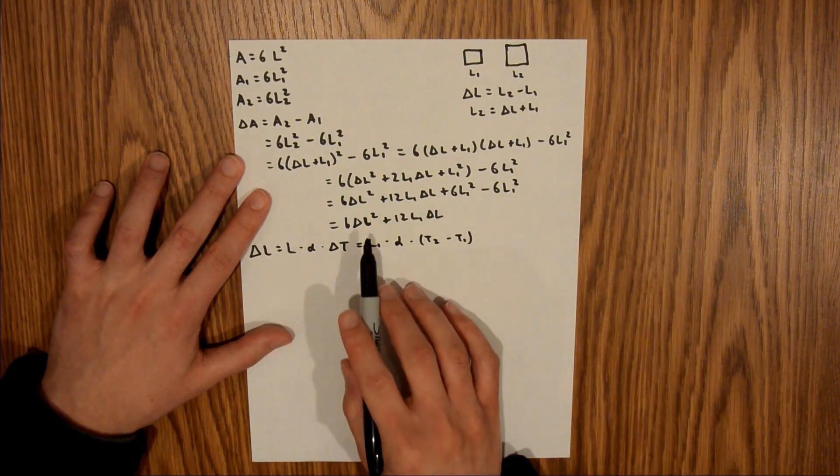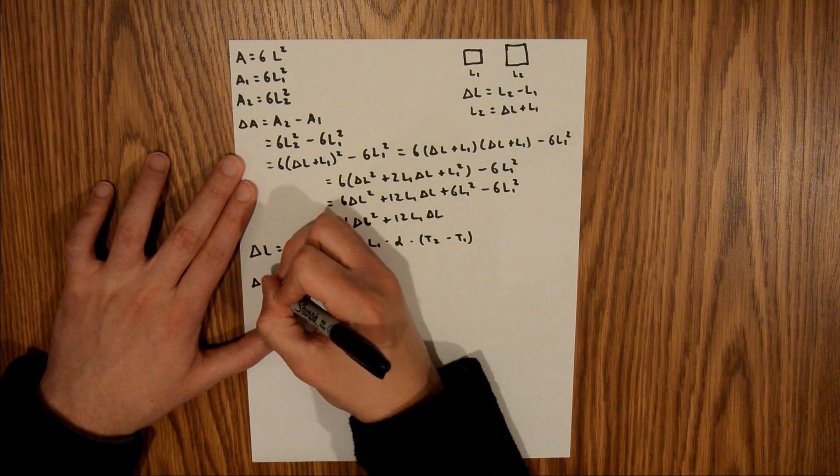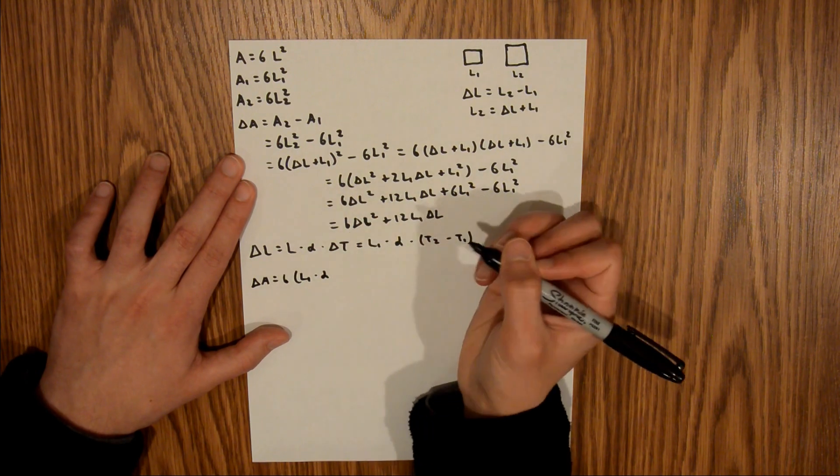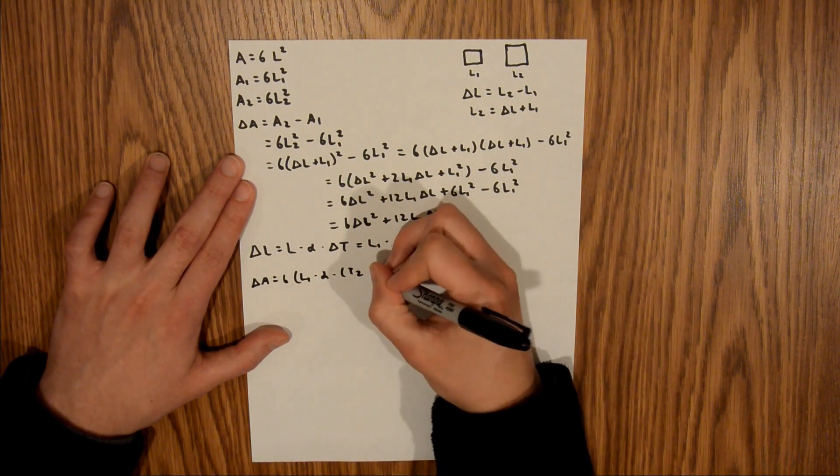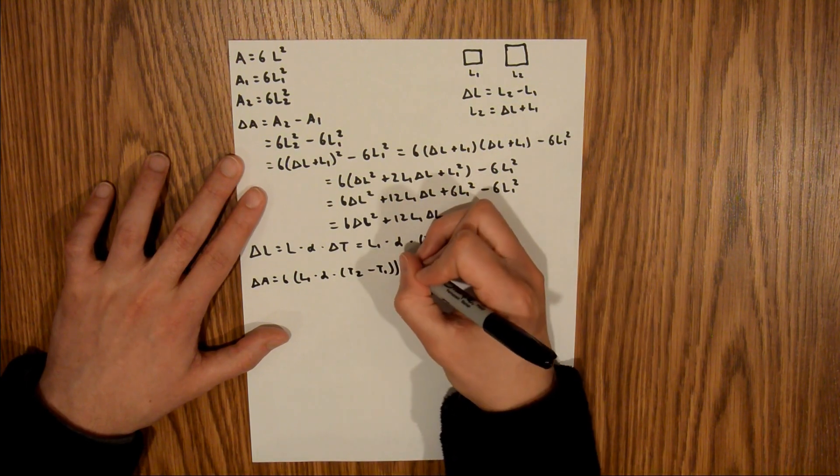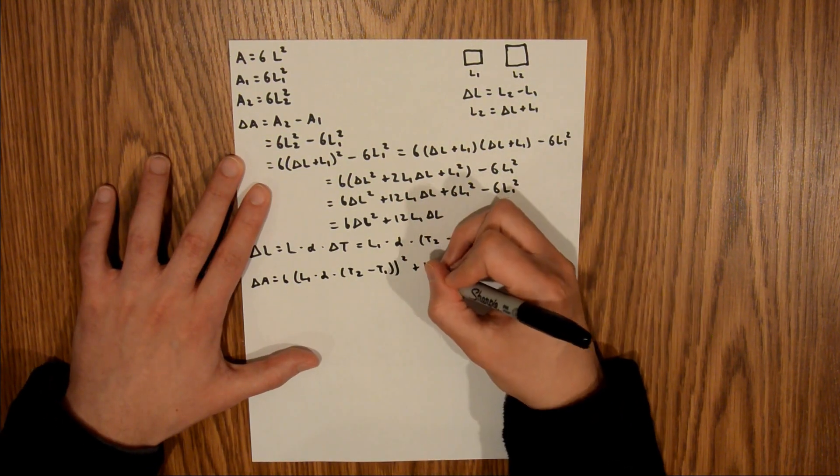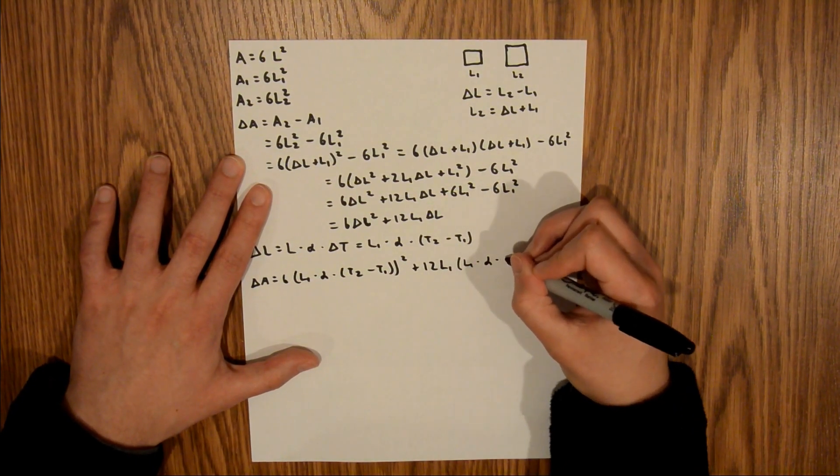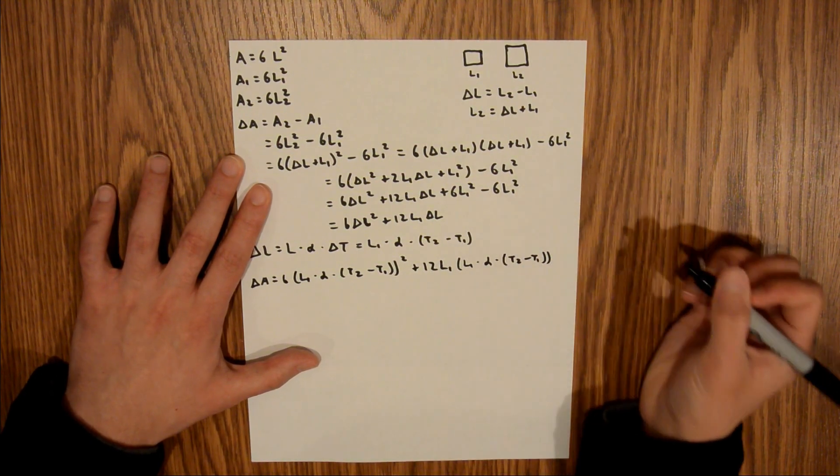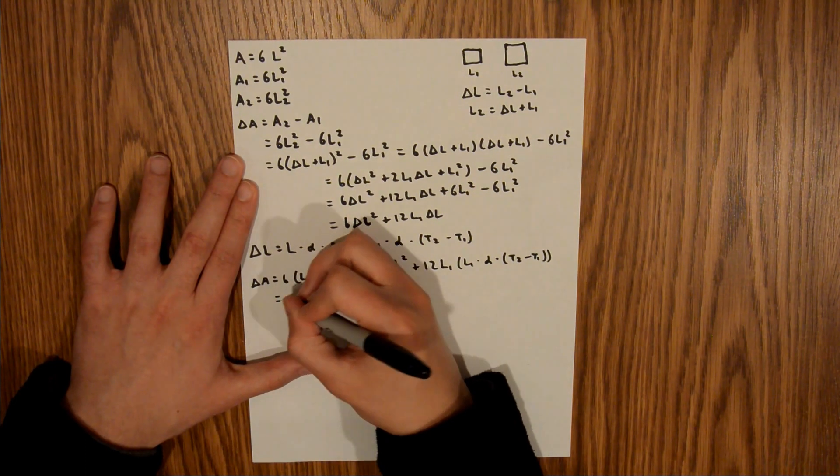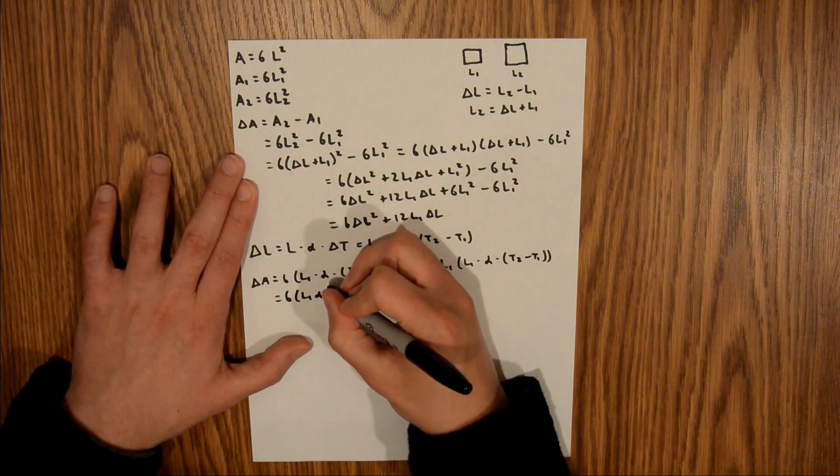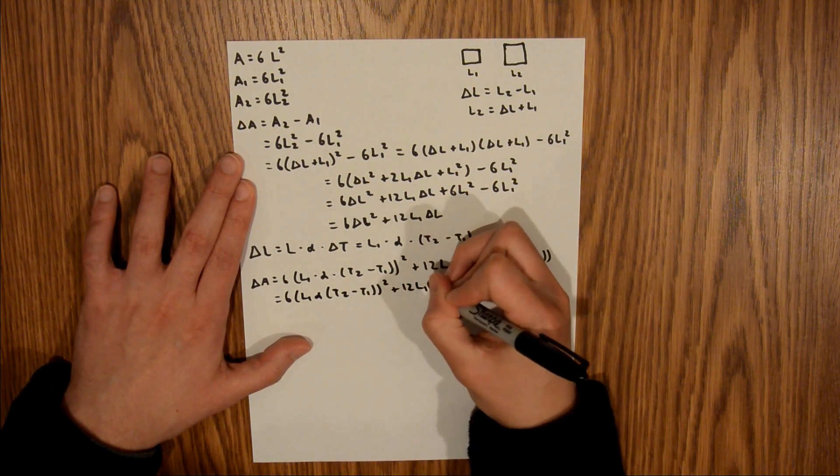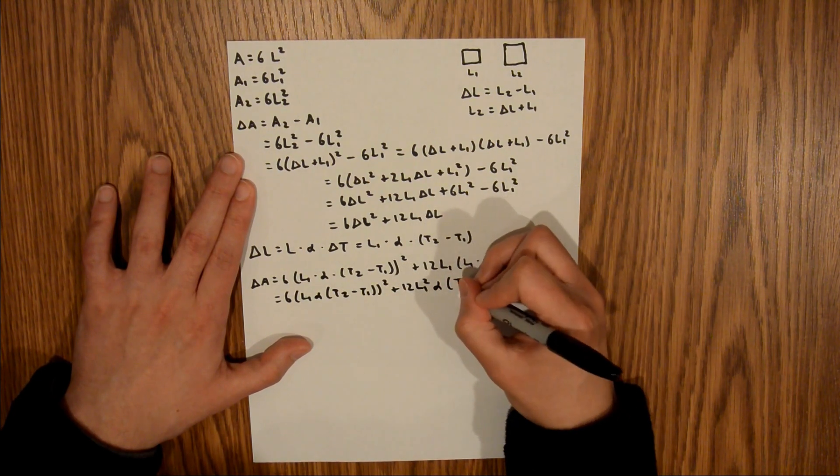Now we can take that and plug it back into this equation. Our delta A is equal to 6 times L1 times alpha times T2 minus T1, that entire quantity squared, plus 12 L1 times L1 times alpha times T2 minus T1. Simplifying, we have 6 L1 alpha T2 minus T1 squared, plus 12 L1 squared alpha T2 minus T1.